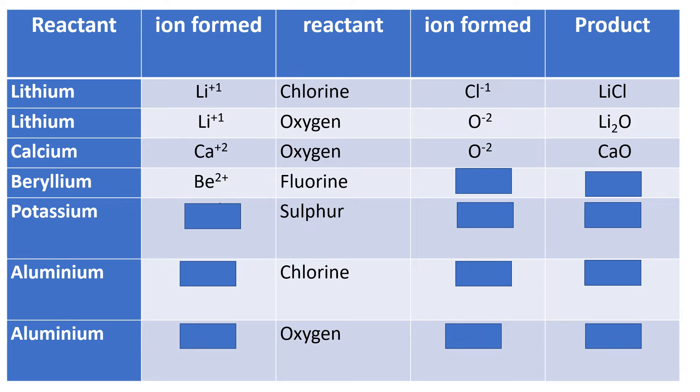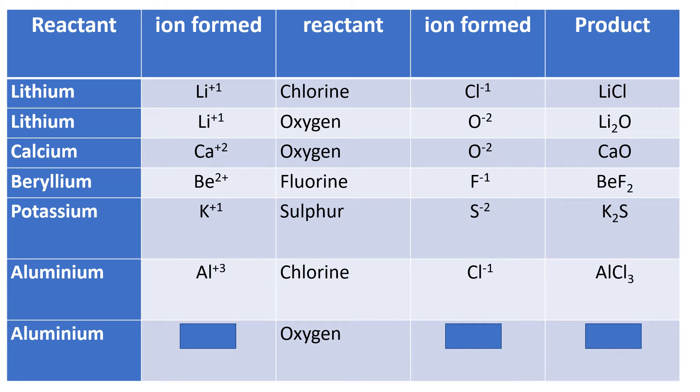Beryllium is group two, so plus two. Fluorine is group seven, so it's going to be F⁻¹. And the formula will be BeF2. Potassium is group one, so plus one. Sulfur is group six, so minus two. The formula or the product would be K2S. Aluminium is group three, so plus three. Chlorine is group seven, so minus one. And the formula will be AlCl3.